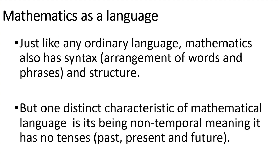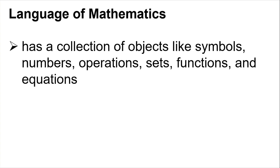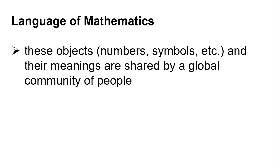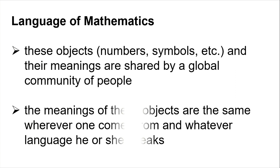Just like any ordinary language, mathematics also has syntax and structure. But one distinct characteristic of mathematical language is its being non-temporal — meaning it has no tenses. It has a collection of objects like symbols, numbers, operations, sets, functions, and equations. It has certain rules and built-in logic that govern the proper usage of this collection of objects. These objects — numbers, symbols, etc. — have meanings shared by a global community of people.